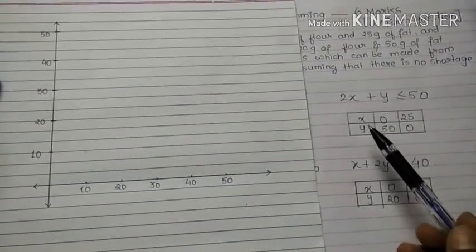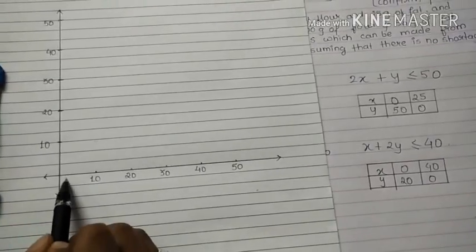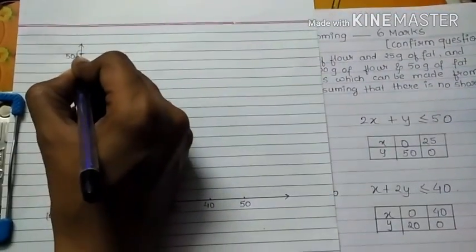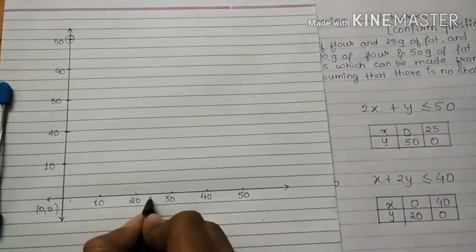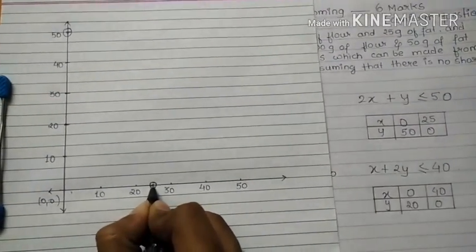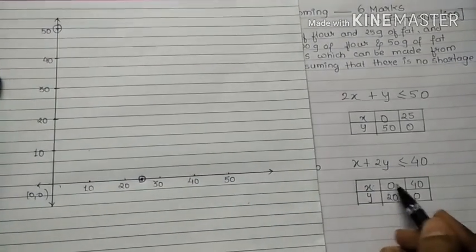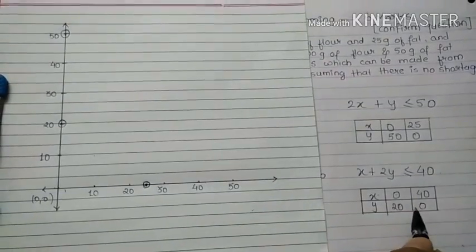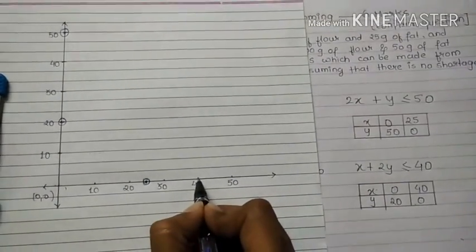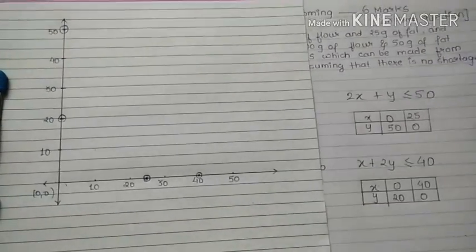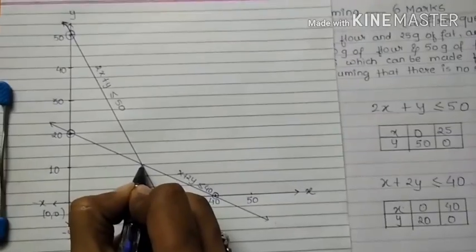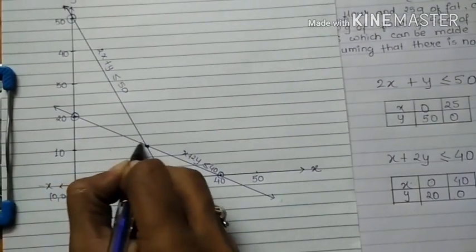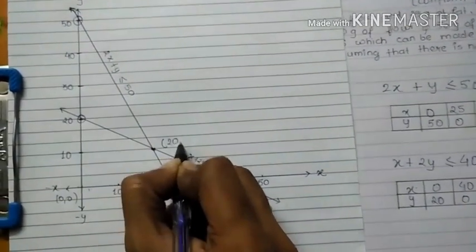Now I have to plot these values on the graph. First point is (0, 50), second point is (25, 0) for equation 1. For equation 2: (0, 20) and (40, 0). These are the two lines plotted from these points. The two lines are intersecting — the intersection point has y-coordinate 10 and x-coordinate 20, that is the point (20, 10).